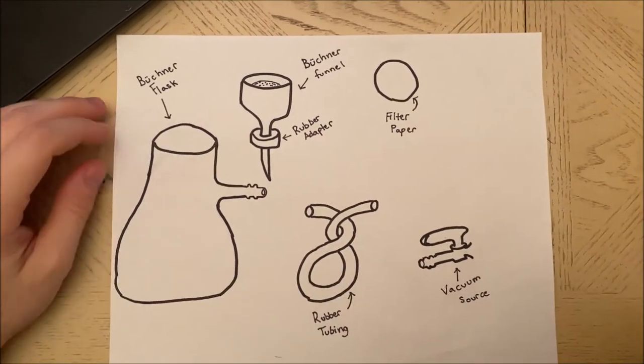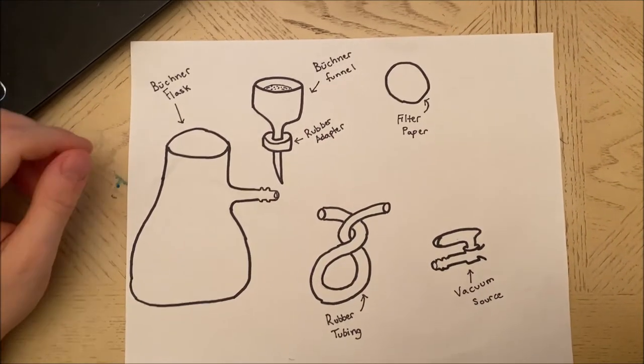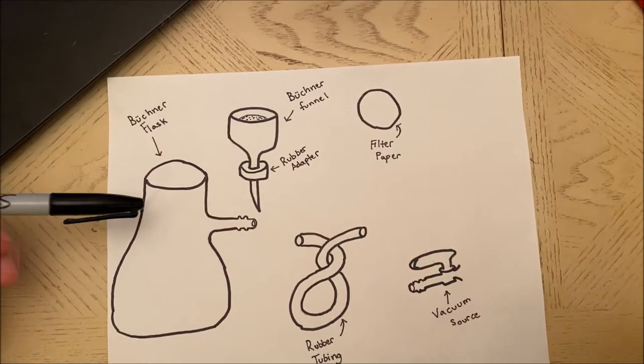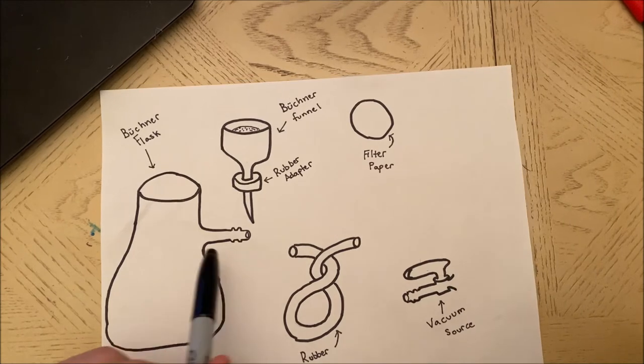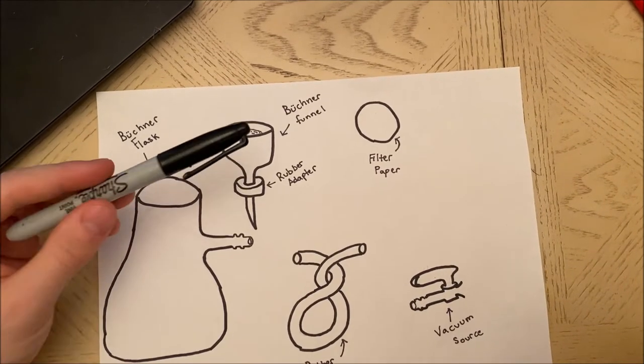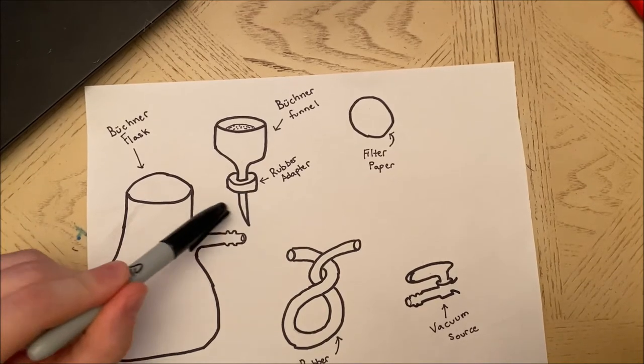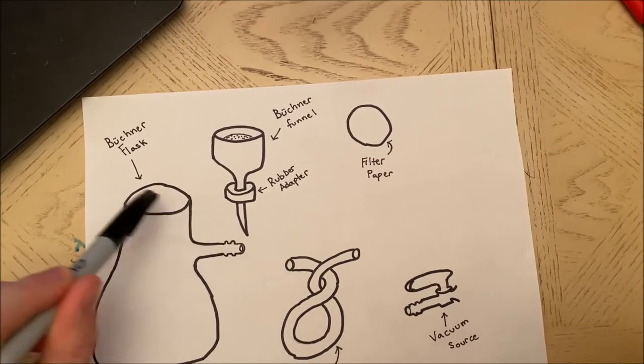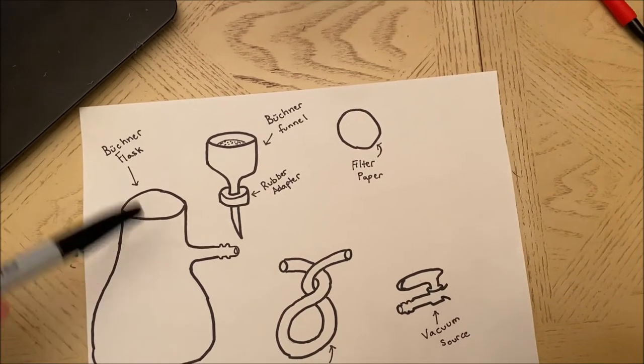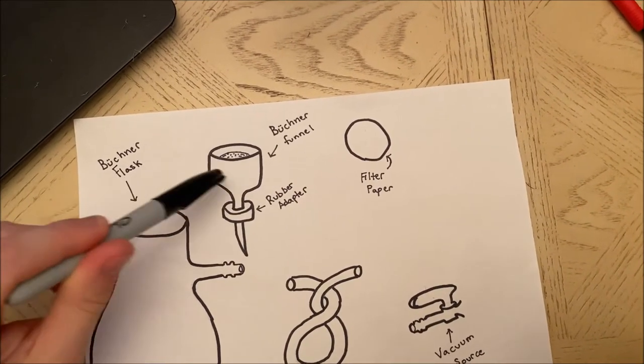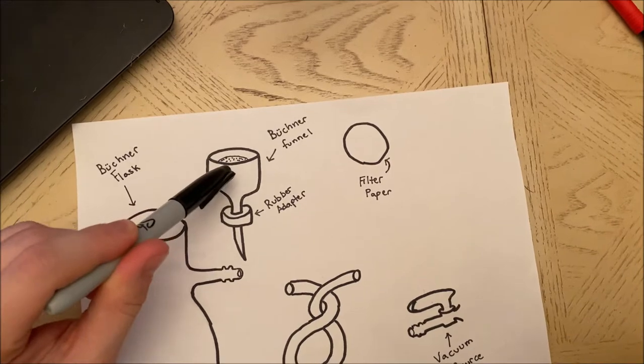The things that we need for vacuum filtration are here on this paper. First thing we need is a Buchner flask with a sidearm. We need a Buchner funnel that has a rubber adapter so that it'll keep everything sealed airtight and nothing will escape the flask. Make sure that the Buchner funnel has holes in it to allow the liquid to pass through.